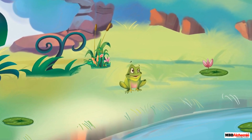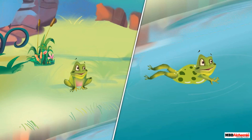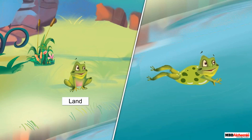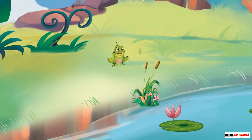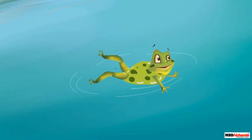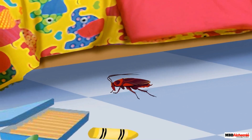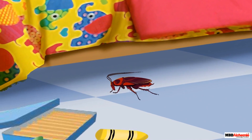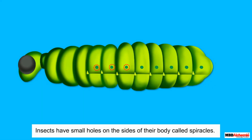A frog is an amphibian — it lives both on land and in water. On land, it breathes through its lungs, whereas in water, it breathes through its skin.